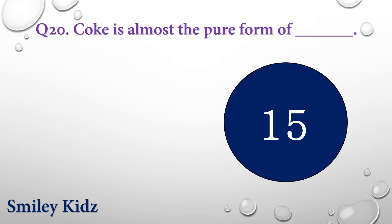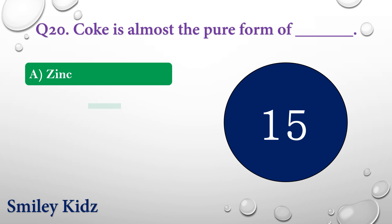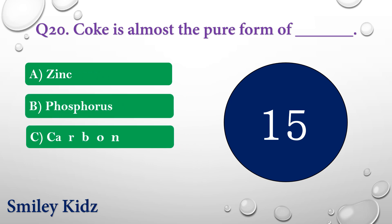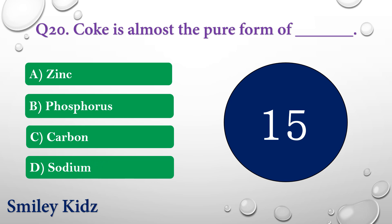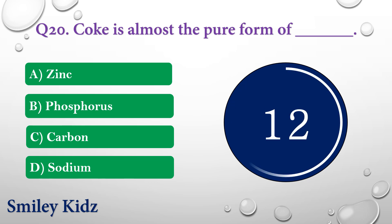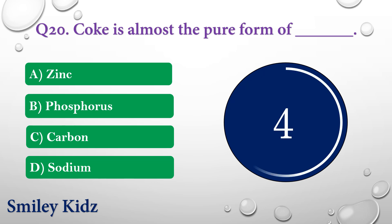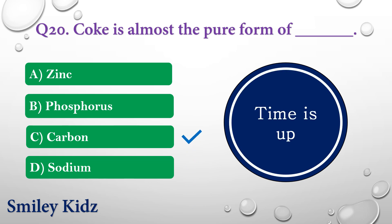Question number twenty: Coke is almost the pure form of dash. The options are: A) Zinc, B) Phosphorus, C) Carbon, or D) Sodium. Your time is up and the right answer is option C — Carbon. Coke is almost the pure form of carbon.